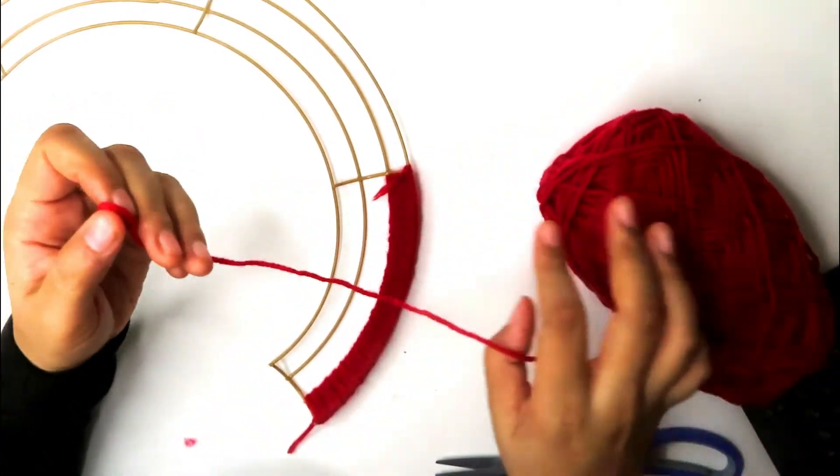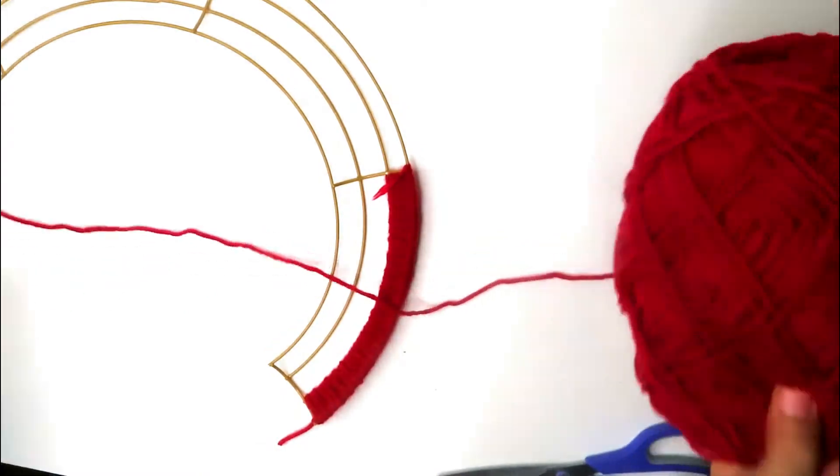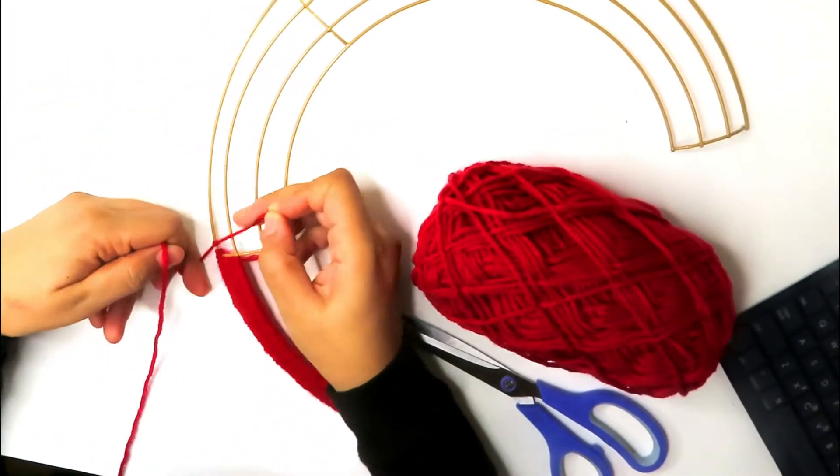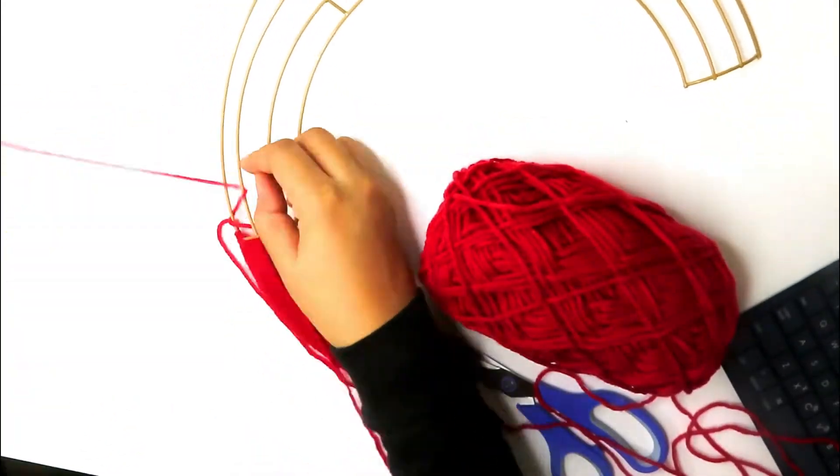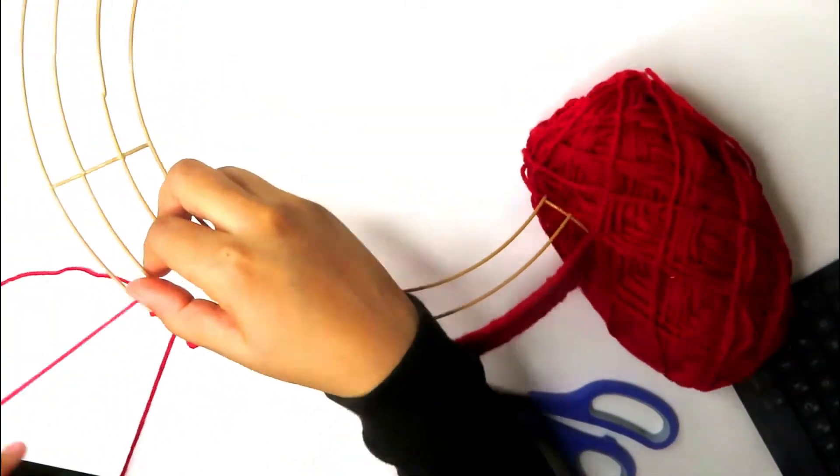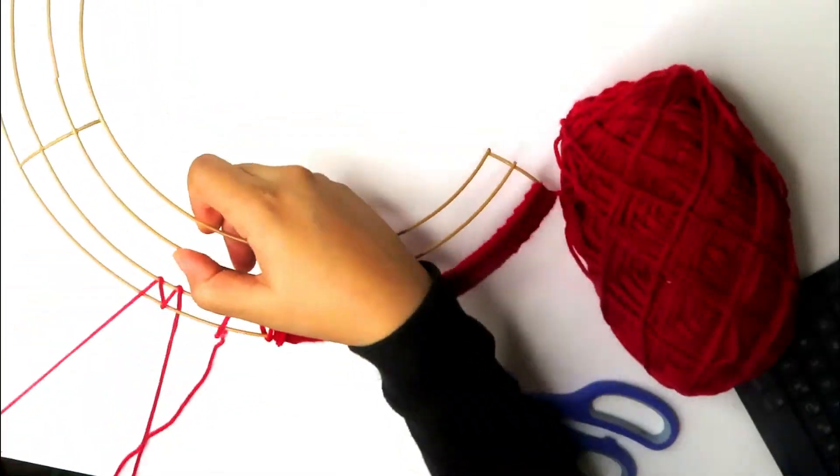Now that the first section is finished, you're going to repeat the process. Pull up about 10 feet of red yarn, tie a knot around the first pole of the bottom of the second section, then take the end of the yarn and wrap it around the first two arches of the rainbow until you've filled up the entire second and third sections.